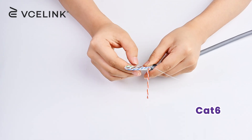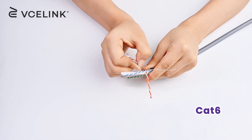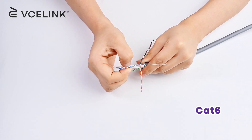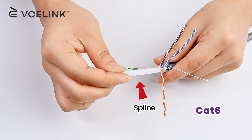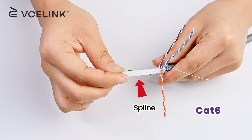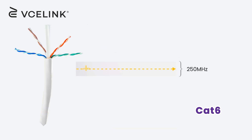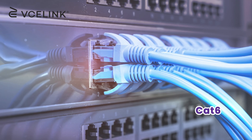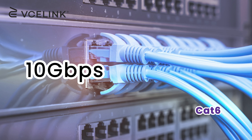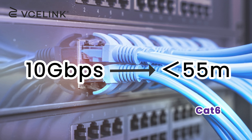CAT 6 Ethernet cable often features a spline in the center to reduce crosstalk among each pair of copper wires. The maximum bandwidth of the CAT 6 cable can reach 250 MHz, and the top speed can be 10 Gbps within 55 meters.